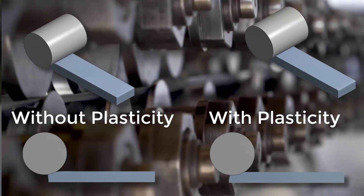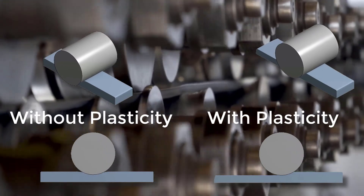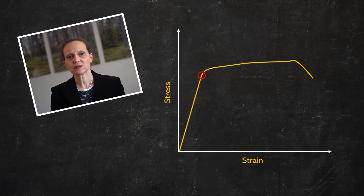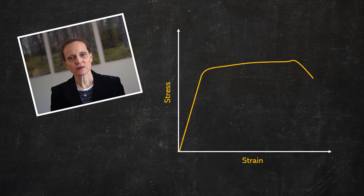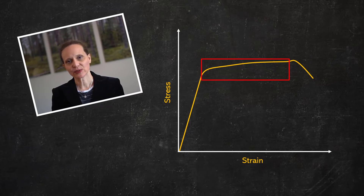Plasticity is an important behavior in many engineering applications, such as cold rolling, metal forming, etc. It refers to the material's response beyond its yield limit, where the deformations are permanent in nature. Most of the time, designers are interested to know what will happen to the parts once they undergo yielding.